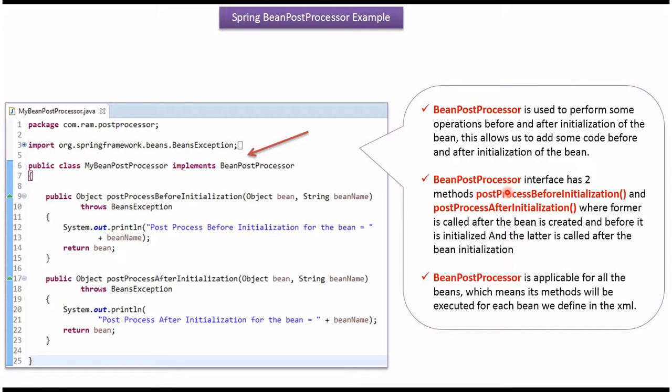The BeanPostProcessor interface has two methods. The first one is postProcessBeforeInitialization, which will be called before initialization of the bean. The second method is postProcessAfterInitialization, which will be called after initialization of the bean.